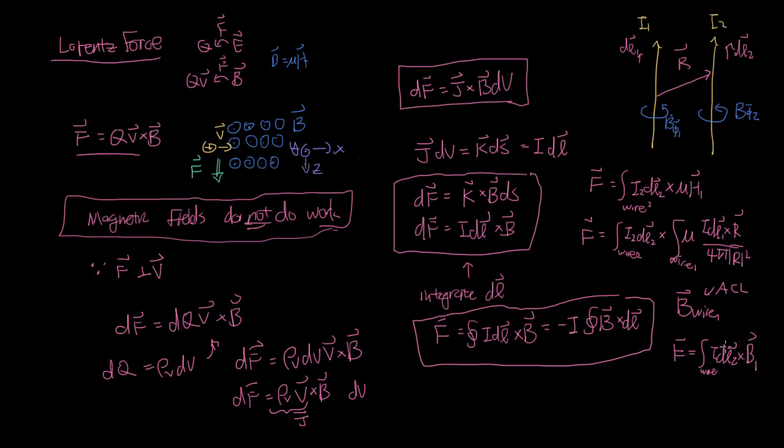So if we use Ampere's circuit law to come up with an expression for the field due to B-wire 1, then we can plug that into this integral here. And then that would be a much simpler expression, because instead of this cross product and this integral, you can substitute it with a simpler expression from Ampere's current law.